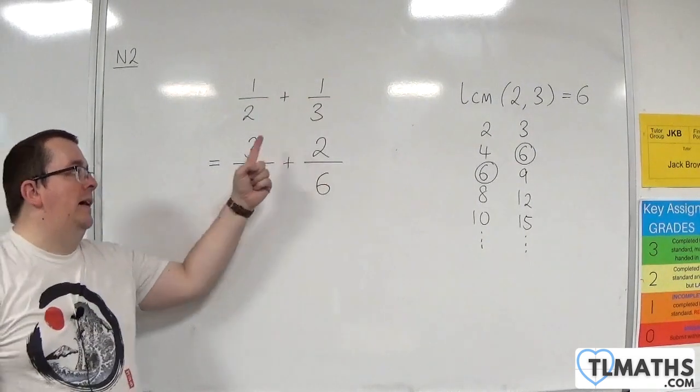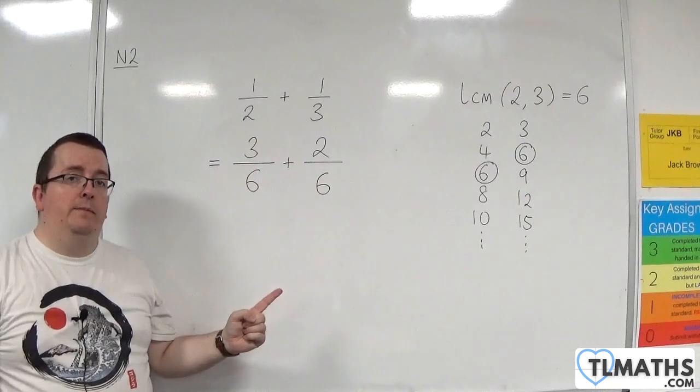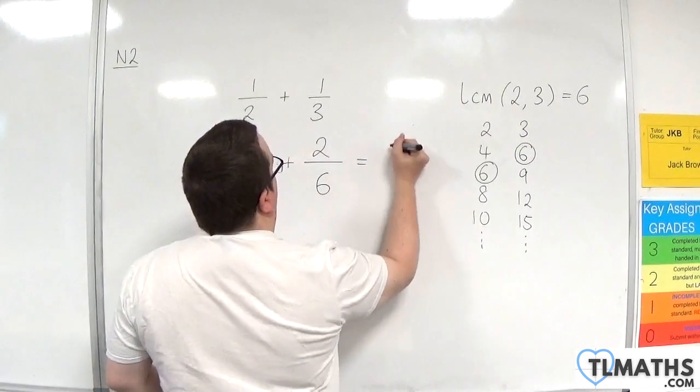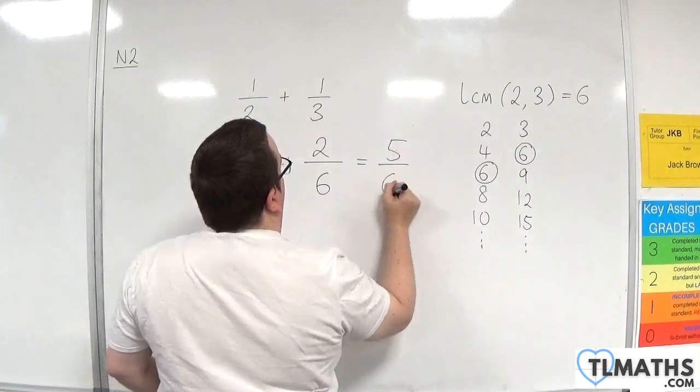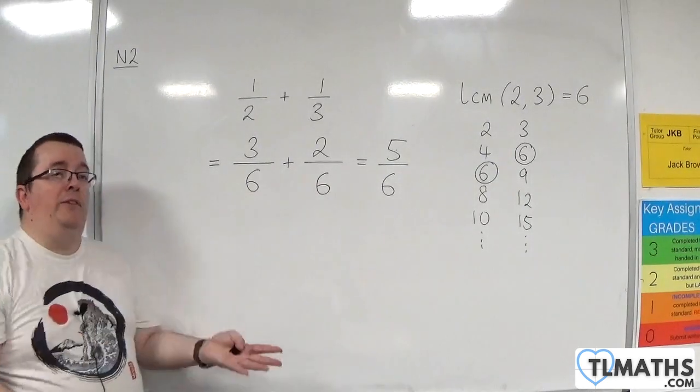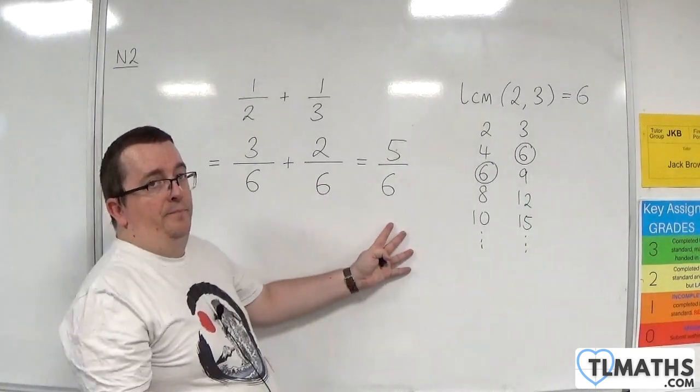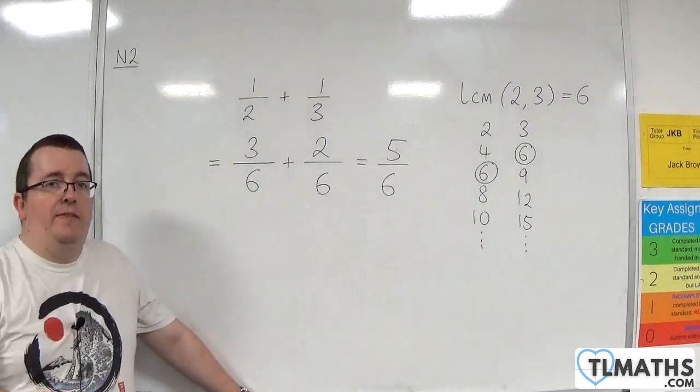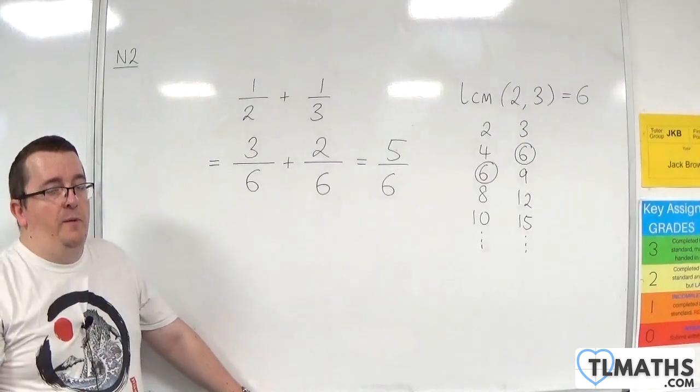Now that these have a common denominator, because they've got the same denominator, I can now add those two fractions together. Because if I've got 3 sixths and I add on 2 sixths, how many sixths have I got? 5 of them. So that is how you can add two fractions together with different denominators.